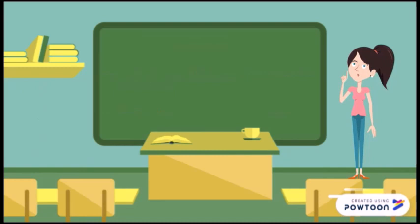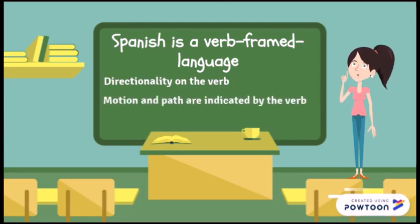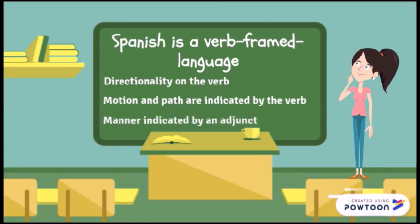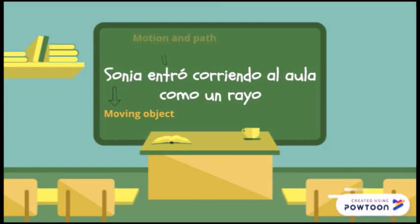On the other hand, Spanish is a verb-framed language as it encodes directionality on the verb. Motion and path are indicated by the verb as well. If there is manner, it is indicated by an adjunct, usually a gerund, andando, or a phrase with como un rayo. In this case, Sonia would be the moving object. Entró would indicate motion and path, and the gerund corriendo and the phrase como un rayo would indicate manner.